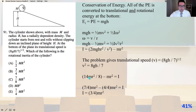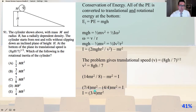So 14mr squared over 8, that quantity minus mr squared equals I. So 7 over 4 mr squared minus 4 over 4 mr squared equals I. And that equals 3 over 4 mr squared, that is answer B.